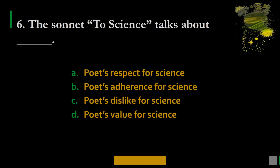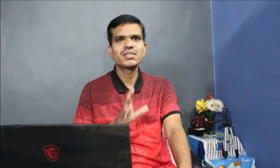Question 6: What is the theme of To Science? Options are A. Poet's respect for science, B. Poet's adherence for science, C. Poet's dislike for science, D. Poet's value for science. The correct option is C — poet's dislike for science. In this sonnet, Edgar Allan Poe talks about his dislike towards science because, according to him, science generally does not give much importance to beautiful things in nature. He shows the contrast between science and the general emotions or attitude of people.